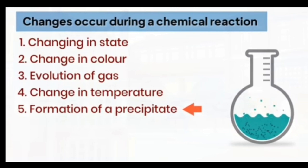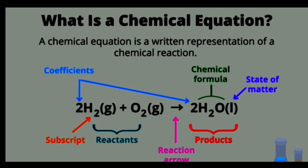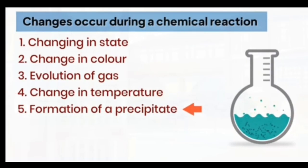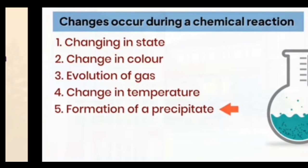What changes occur during a chemical reaction? First, change in state — for example, a gas reactant may produce a liquid product. Second, change in color. Third, evolution of gas. Fourth, change in temperature. Fifth, formation of a precipitate (solid).